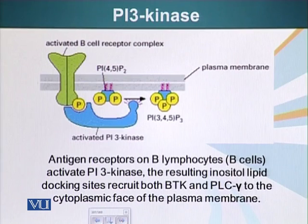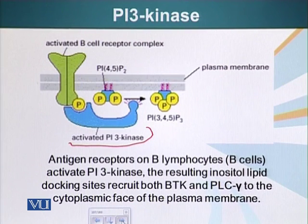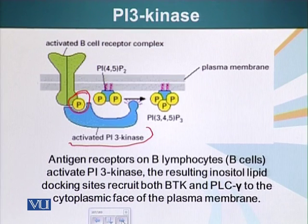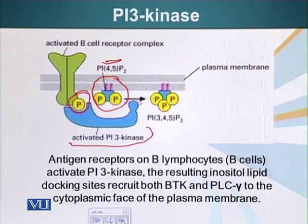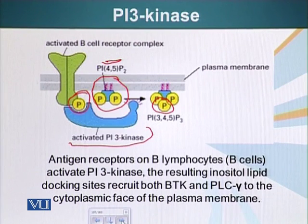Let's look at how this enzyme works. Here is our PI3 kinase — in this case, the cell is a B cell. B cells secrete antibodies which help us defend against pathogens. When the B cell receptor gets activated, there is a phosphate group addition to the cytoplasmic domain of this receptor. This helps PI3 kinase to interact with and become activated by this receptor. It phosphorylates its substrate, phosphatidylinositol bisphosphate, because it already has two phosphates. PI3 kinase attaches the phosphate group at carbon atom number 3, resulting in inositol lipid docking sites which can recruit BTK and PLC gamma to the cytoplasmic face of the plasma membrane.